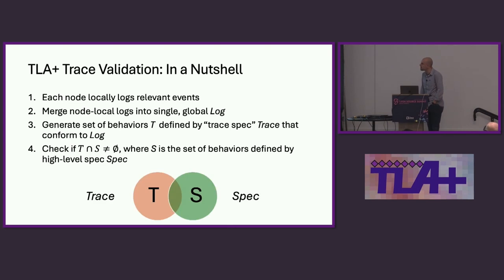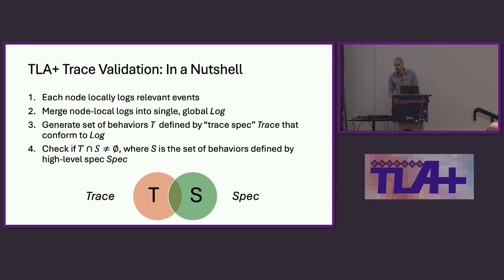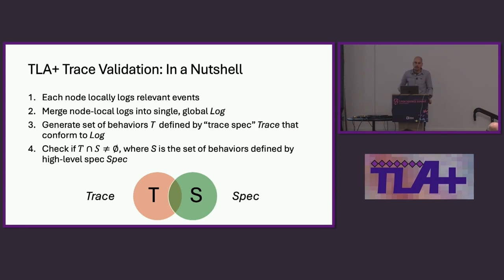The answer is pretty simple and straightforward. We have a distributed system, and all of your nodes are logging the local events anyway — each node maintains a log file written to local storage. If there's an incident in production, you look at those log files. So in testing, we collect these log files and combine them into one single global log by some timestamp so that the causal order is maintained.